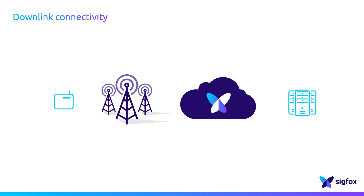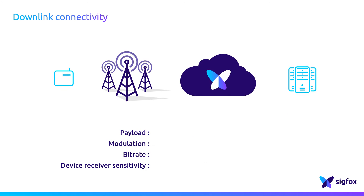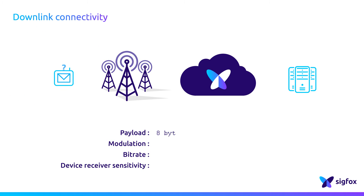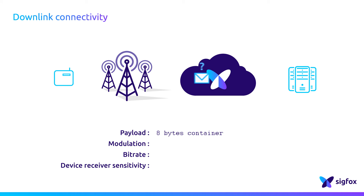The payload that can be put in a downlink message is 8 bytes long. It's enough, for example, to change a parameter in the device, but not enough for, for example, an upgrade.